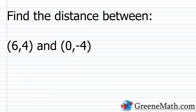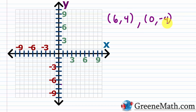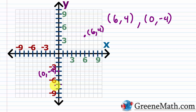Now let's talk about how to find the distance between two points on a coordinate plane using the Pythagorean formula. We want to find the distance between (6, 4) and (0, −4). For the point (6, 4), we go six units right and four units up from the origin. For (0, −4), we drop four units down from the origin.